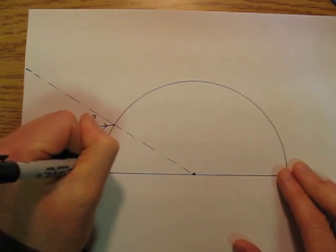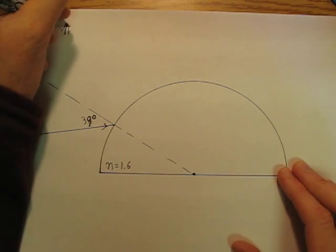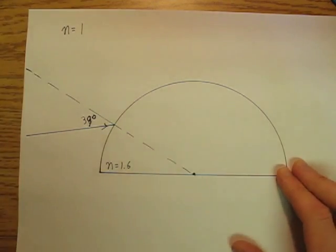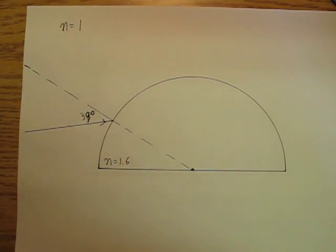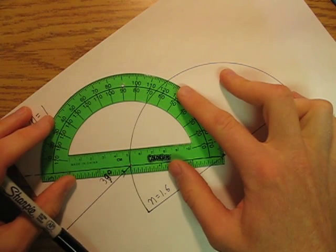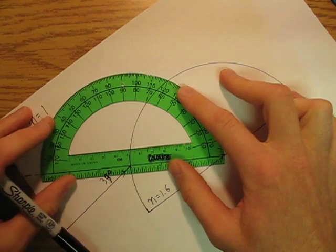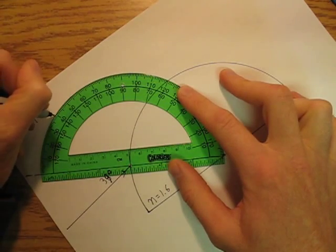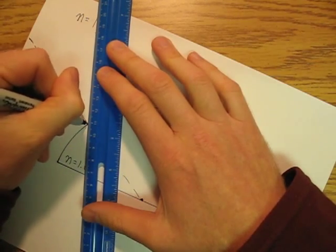And I have in here n equals 1.6 and here n equals 1. Now, like my other example, we're going to have some of the laser is going to bounce off of that surface. 39 degrees. And so some of the laser is going to bounce off at 39 degrees, like that.